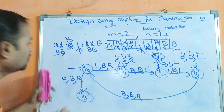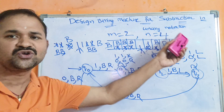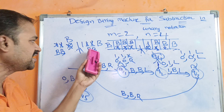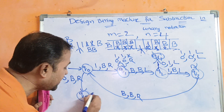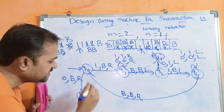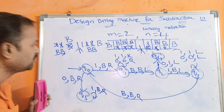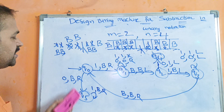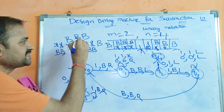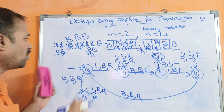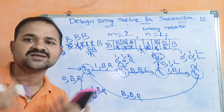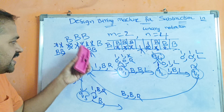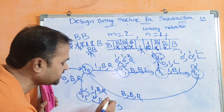The next state is q5. Since n equals 4, there may be remaining ones. On q5, if we read a one, replace it with blank and move right. We continue this self-transition on q5 until all remaining ones are replaced by blanks. Once all symbols are blank, the Turing machine halts.